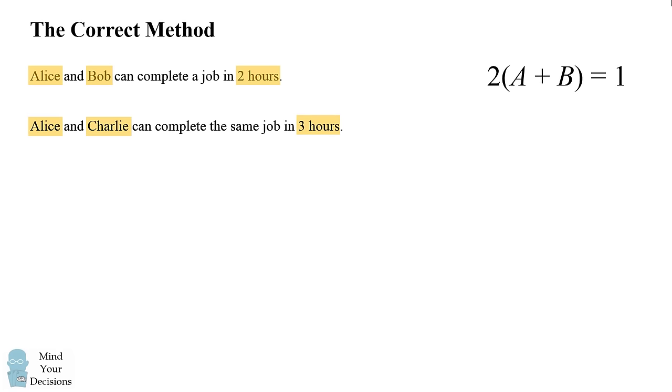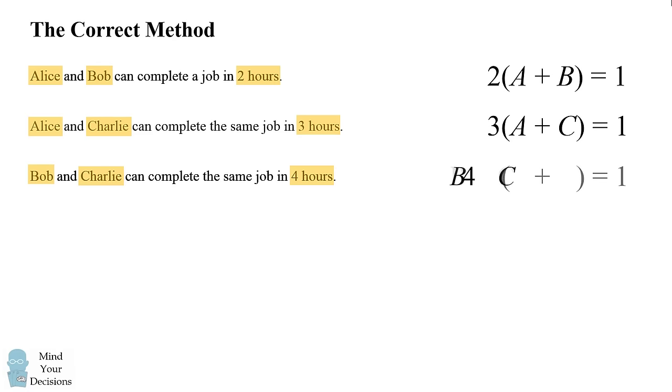So we can now translate the second sentence. We have Alice and Charlie completing the job in three hours. This would translate into three times the quantity A plus C equals 1, where C is the percentage of the job that Charlie completes in one hour. We also have that Bob and Charlie can complete the job in four hours. So that would mean 4 times the quantity B plus C equals 1.